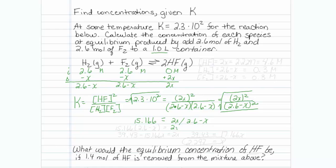I will crisscross and I will have 2x is equal to 15.166 times 2.6 minus x. That turns out to be 39.43 minus 15.166x is equal to 2x. And I can further simplify this by saying 39.43 is equal to 17.166x, which means that x is equal to 2.297.